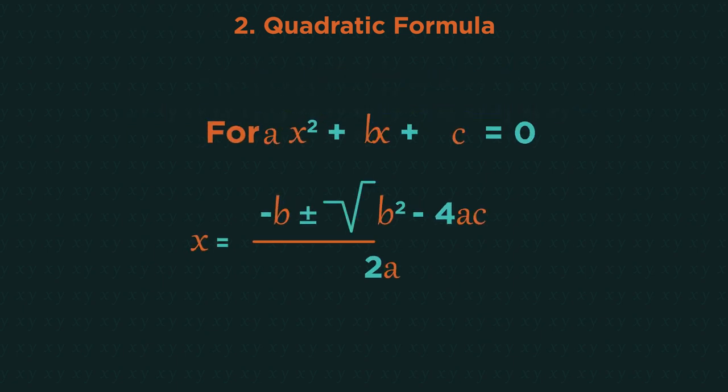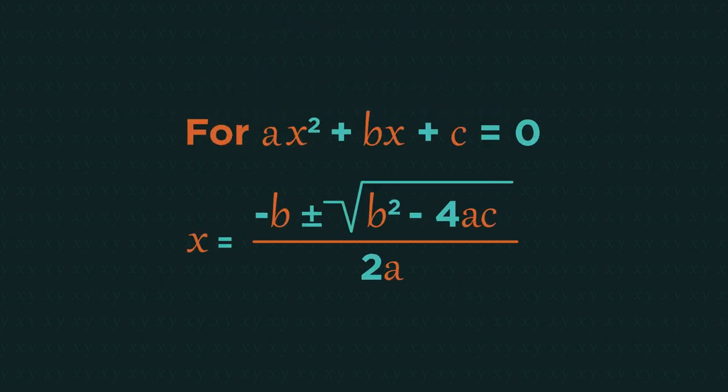So let's have a look at how to use the quadratic formula to solve quadratics. Firstly, make sure your quadratic equals zero. Then a is the number in front of the x squared, b is the number in front of the x, and c is the number on its own. Make sure you keep the sign in front of the numbers.